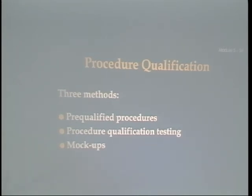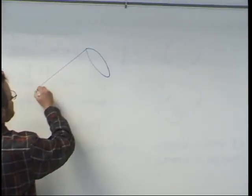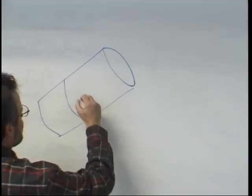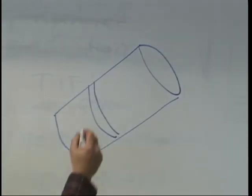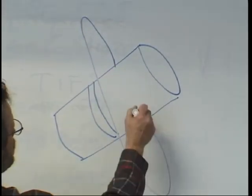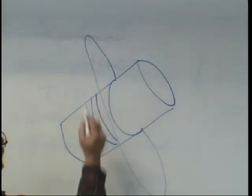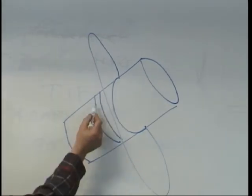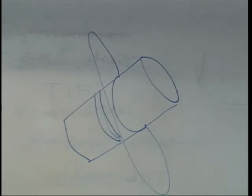An example of a mock-up would be a pipe weld with what's called a restriction ring around it. This ring comes within one-half to two inches of where you have to weld. By putting this restriction ring in your way, they're simulating a tight corner where you have to get in to make a weld.